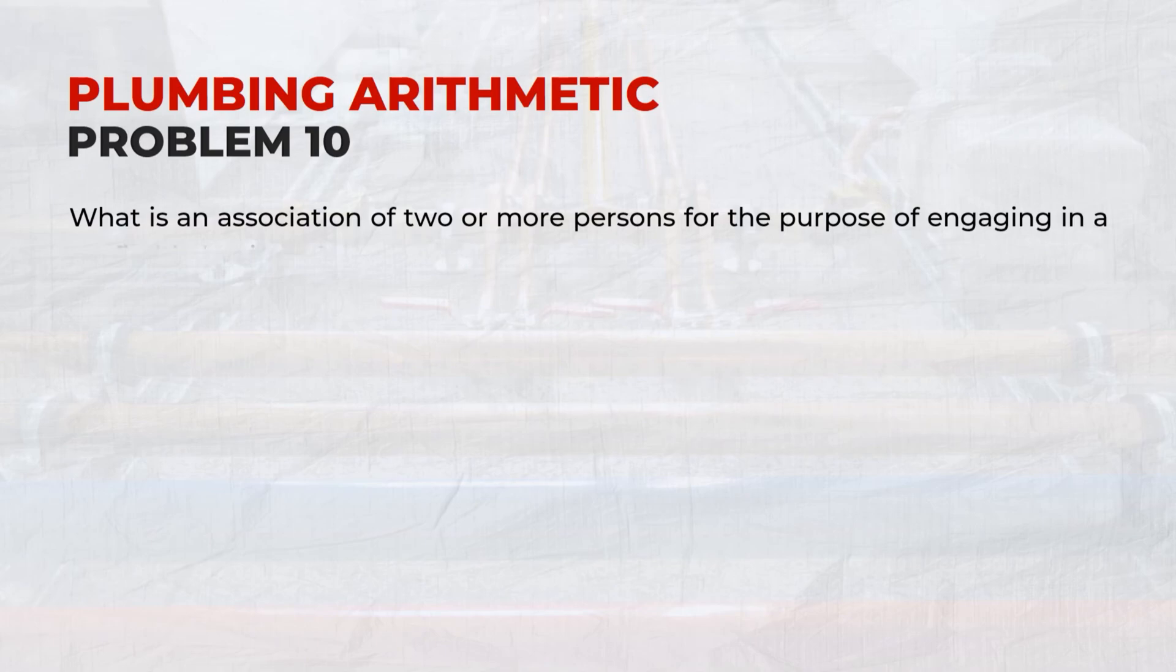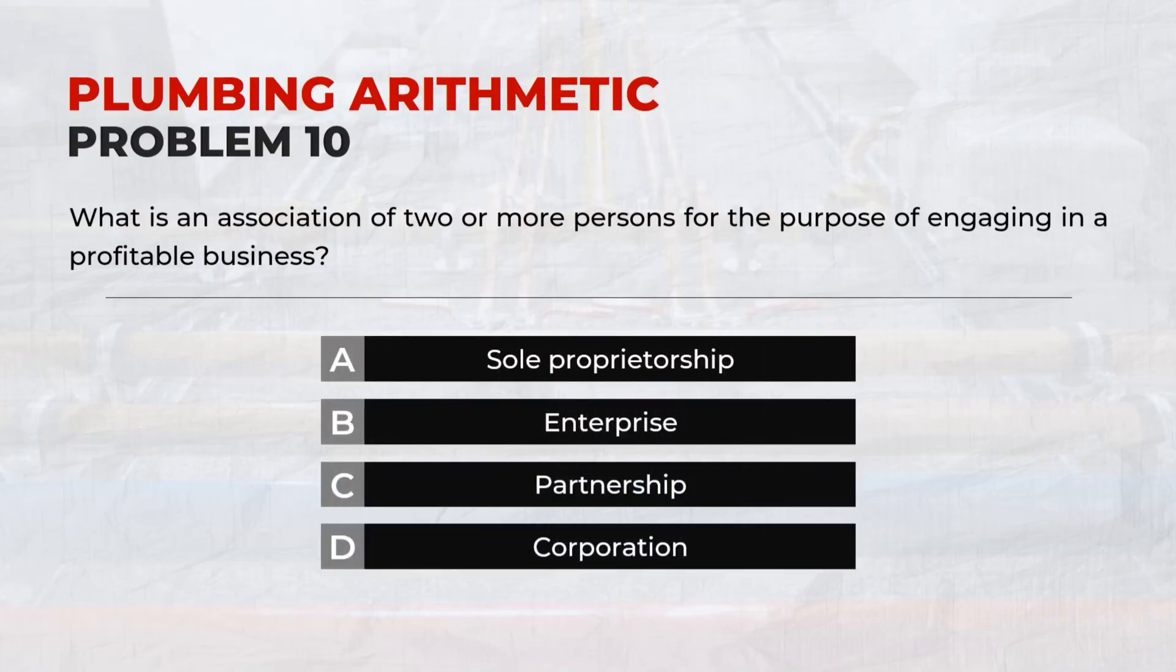Problem 10: What is an association of two or more persons for the purpose of engaging in a profitable business? Answer: C, Partnership.